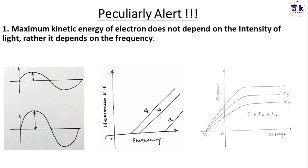This experiment has some peculiarities. The first peculiarity is the maximum kinetic energy of the electron does not depend on the intensity of the light, rather it depends on the frequency. According to Maxwell's theory, light is nothing but an electromagnetic wave. The wave's intensity is proportional to amplitude squared, which means greater the amplitude, greater the intensity, which means greater energy.